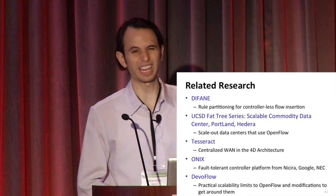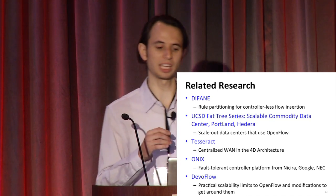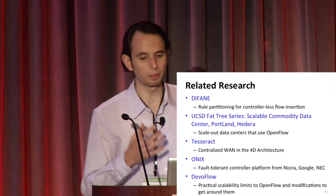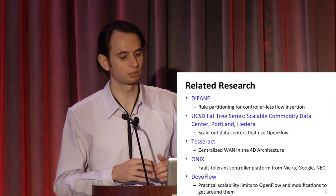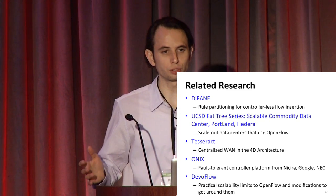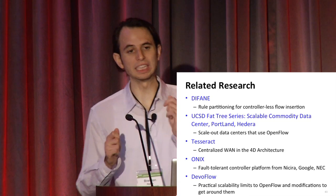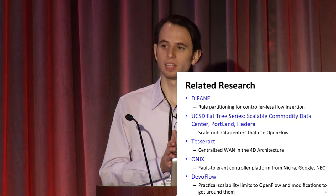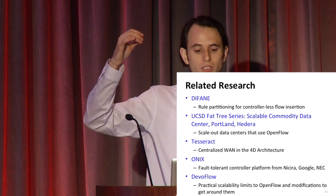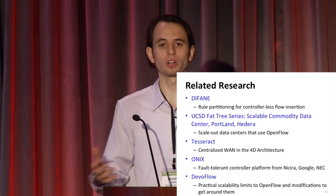Another one is Tesseract - this is SDN before it was called SDN, so it's worth looking at for the architectural principles. The idea is a centralized WAN in a 4D architecture, which has planes to disseminate data, to discover things, to make decisions - a way to think about a hierarchy of controlling wide area networks. Another one is ONIX - the first example to my knowledge of a distributed controller that works on top of OpenFlow switches. If you're building a wide area network or data center needing fault tolerance, you need distributed systems techniques to share data between controller instances.